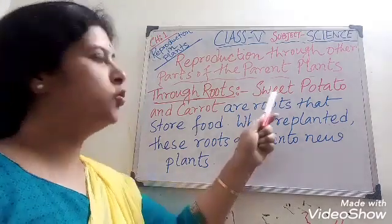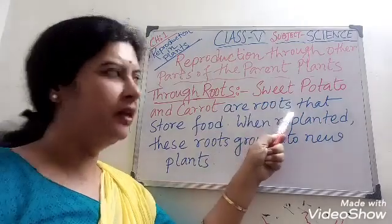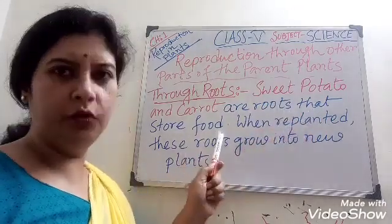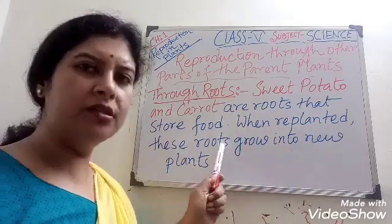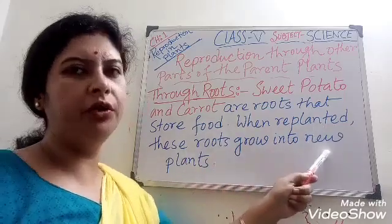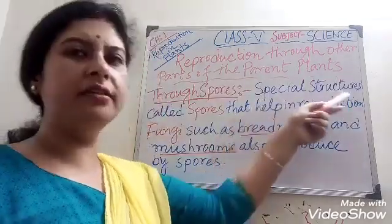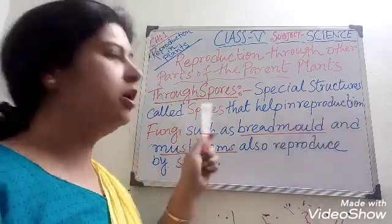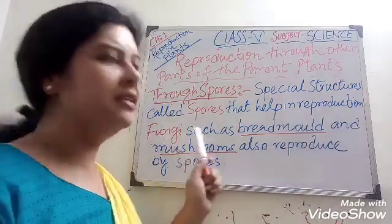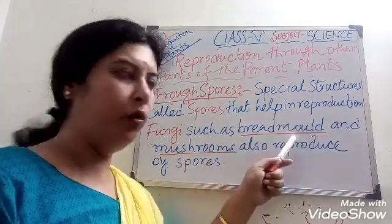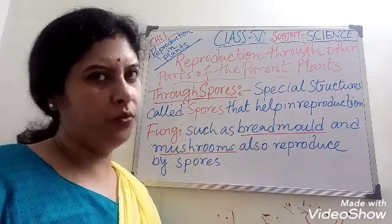Through roots. Sweet potato and carrot are roots that store food. When replanted, these roots grow into new plants. Through spores — special structures called spores that help in reproduction. Fungi such as bread mold and mushroom also reproduce by these spores.